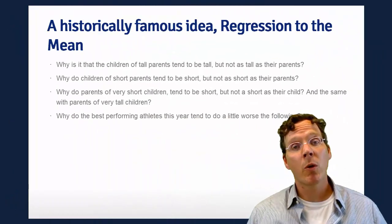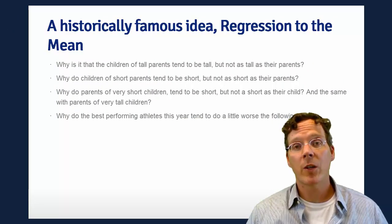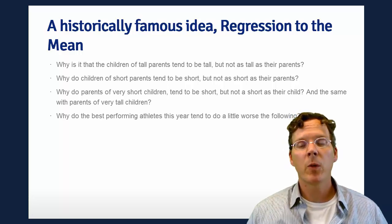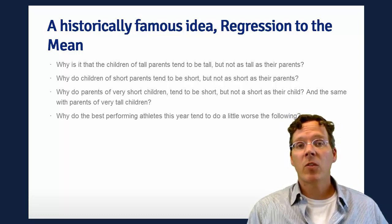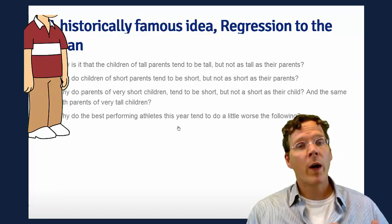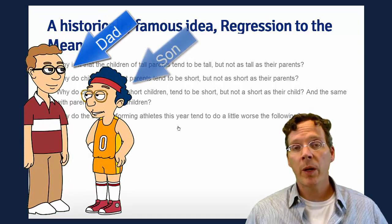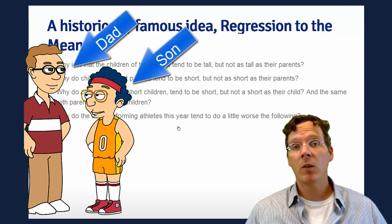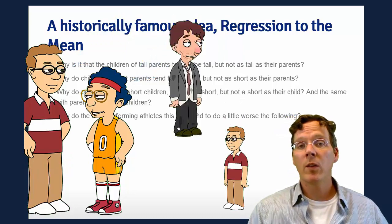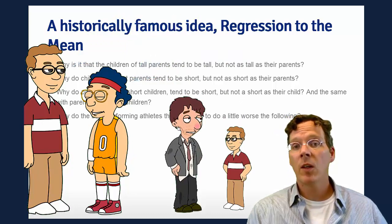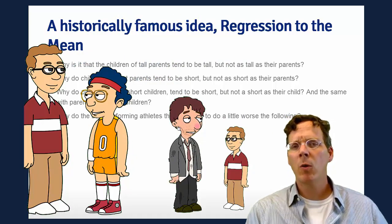Regression to the mean was an important milestone in the discovery of regression, so we're going to talk about it. It was discovered by Francis Galton. Regression to the mean asks questions like this: Why is it that the children of very tall parents also tend to be tall, but not quite as tall as their parents? And also, why do the children of very short parents tend to also be very short, but not quite as short as their parents?